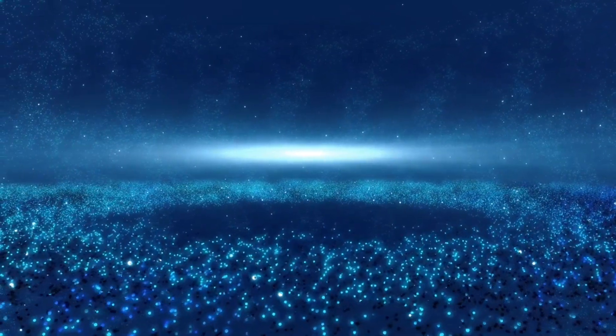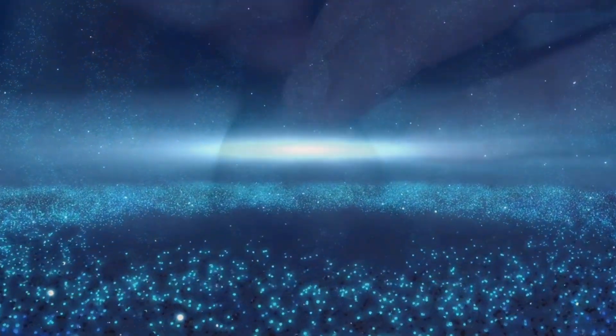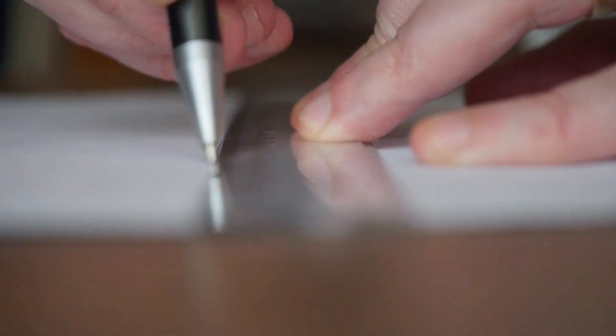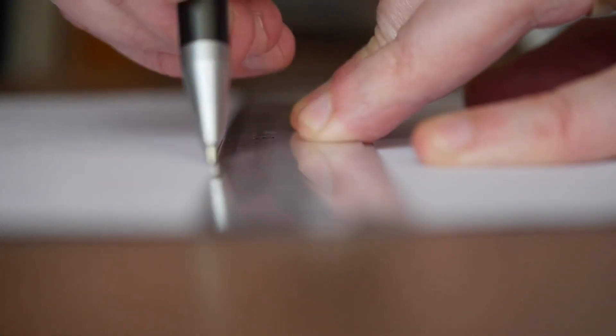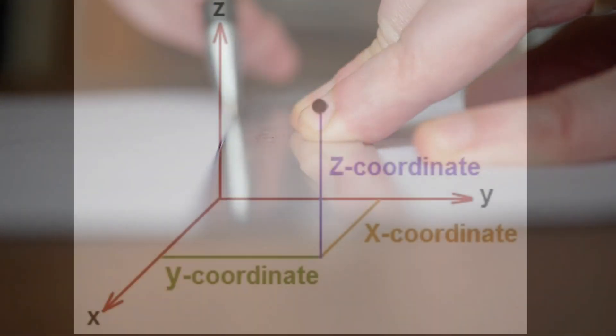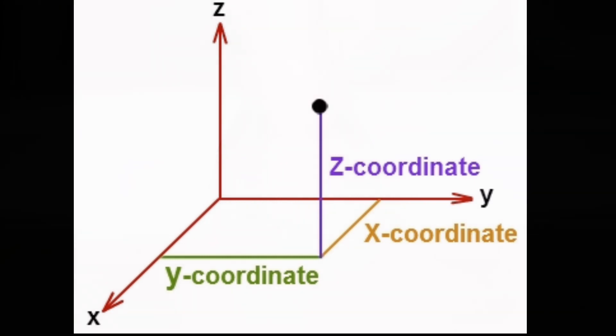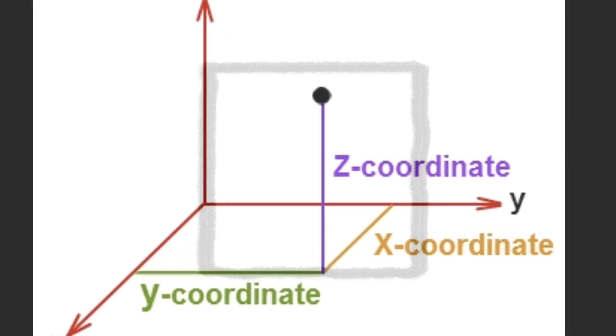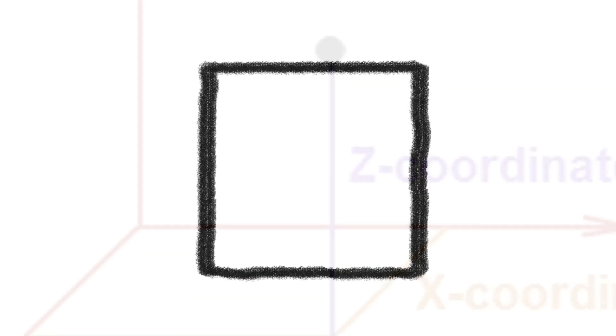We will try to visually show how all of these 10 dimensions look like. The first dimension, as already noted, is that which gives it length, aka the x-axis. A good description of a one-dimensional object is a straight line, which exists only in terms of length and has no other discernible qualities. Add to it a second dimension, the y-axis or height, and you get an object that becomes a two-dimensional shape, like a square.